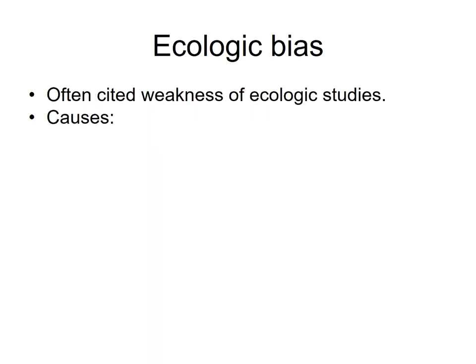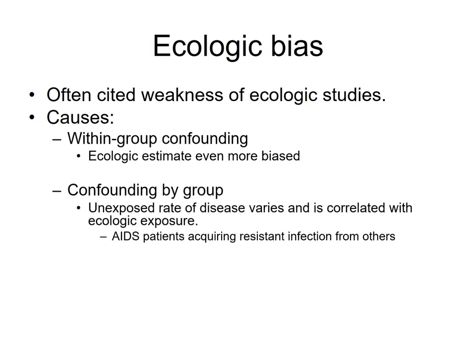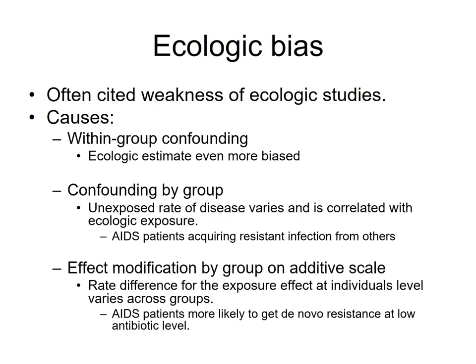Ecological bias is an often-cited weakness of ecological studies. Its causes include within-group confounding, which makes ecological estimates even more biased, and confounding by group, where the unexposed rate of disease varies and is correlated with ecological exposure — for example, AIDS patients acquiring resistant infection from others. Another cause is effect modification by group on the additive scale, where the rate difference for the exposure effect at the individual level varies across groups — for example, AIDS patients more likely to get de novo resistance at low antibiotic levels.